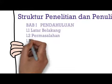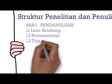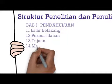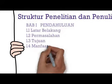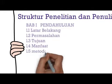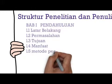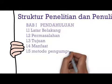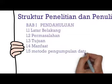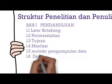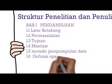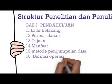Tujuan: bagian ini mengungkapkan tujuan yang ingin dicapai melalui penulisan ilmiah. Selanjutnya manfaat: bagian ini menjelaskan manfaat dari penelitian. Selanjutnya metode pengumpulan data: bagian ini menjelaskan berbagai teknik yang digunakan dalam pengumpulan data. Selanjutnya definisi operasional: penulis dapat menjelaskan definisi dari variabel yang dipakai dalam tulisan.